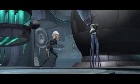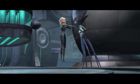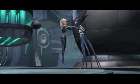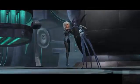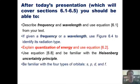You keep your slimy tentacles off my planet. If you wanted to stop me, you should have done it when you possessed the quantonium. Now you're nothing. Use equation 6.8 and be familiar with the Heisenberg Uncertainty Principle. Be familiar with four types of orbitals, S, P, D, and F, and note that we'll skip section 6.3.